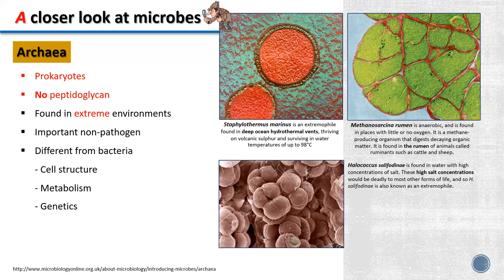Some archaea can live in environments without oxygen, which is called an anaerobic condition. For example, archaeans living in the rumen of animals. And some archaea can live in very high salt concentrations. In conclusion, this kind of organism is mostly found in extreme environments.